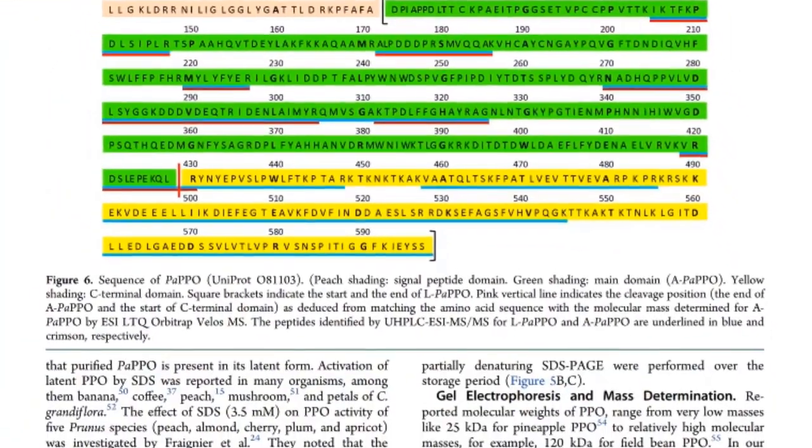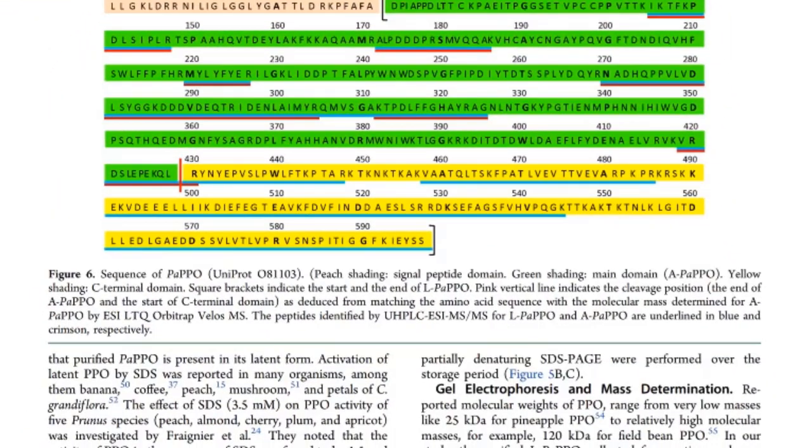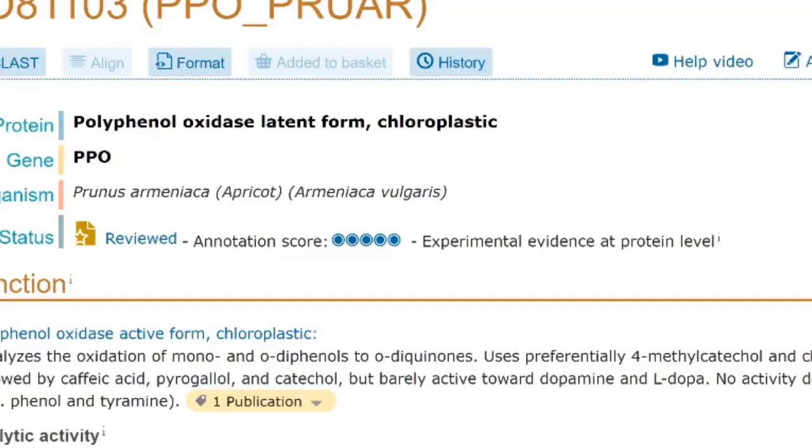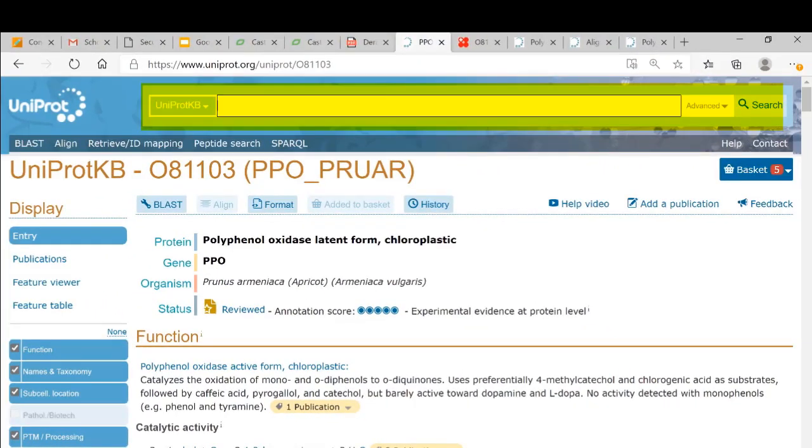In the figure caption, you can see that this amino acid sequence of the PPO from apricot was deposited in a database, the Uniprot database. And here is the code. So if we enter this code into the search window right here for finding the sequence, you get to the following entry.